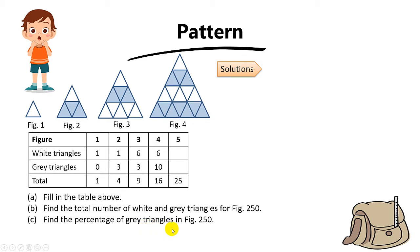So let me share with you our method of solving this question. We have 4 figures. Figure 1 has only 1 white triangle and no grey triangles. Figure 2 has 1 white and 3 grey, so the total is 4 triangles. Then for figure 3 and figure 4, the numbers are given.